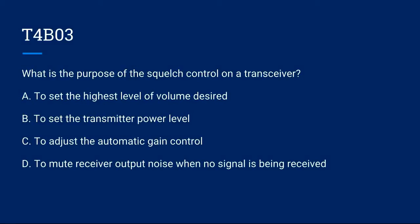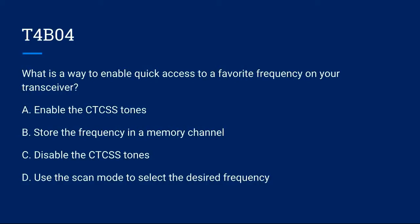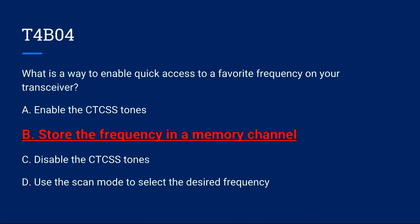T4B03: What is the purpose of the squelch control on a transceiver? A. To set the highest level of volume desired. B. To set the transmitter power level. C. To adjust the automatic gain control. D. To mute receiver output noise when no signal is being received. T4B04: What is a way to enable quick access to a favorite frequency on your transceiver? A. Enable the CTCSS tones. B. Store the frequency in a memory channel. C. Disable the CTCSS tones. D. Use the scan mode to select the desired frequency. The correct answer is B. Store the frequency in a memory channel.